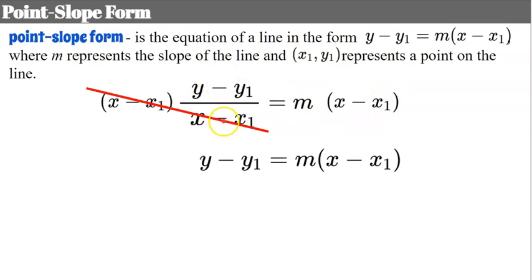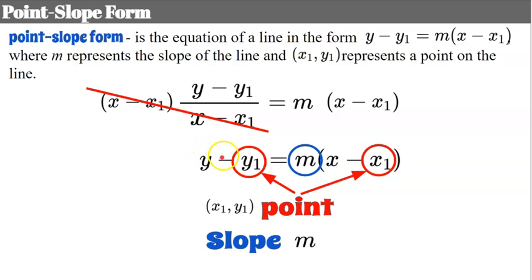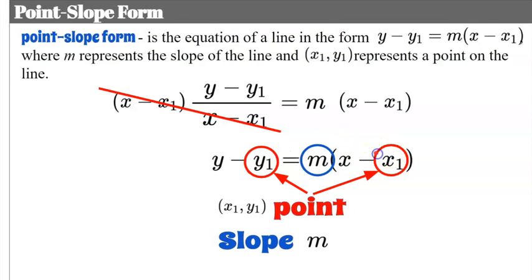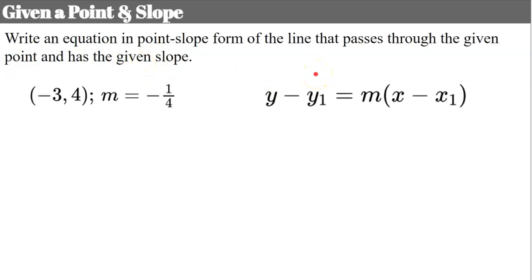If you know the formula for finding slope, it's very easy to remember point slope form — it's derived from it. Keep in mind that (x₁, y₁) is a point on the line, m is your slope, and it's y subtract the y coordinate and x subtract the x coordinate. Now let's practice. Given a point and slope, we write the equation in point slope form of the line passing through that point with that slope.